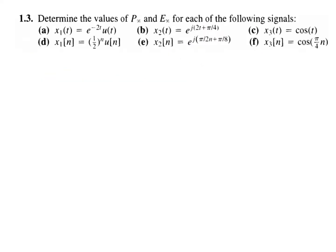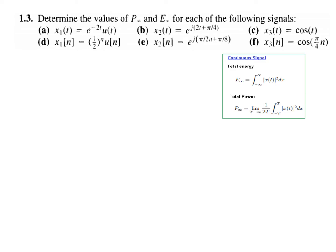Now let's come to question number 1.3. We have to determine the infinite power and infinite energy for six signals — A, B, C are continuous time signals and D, E, F are discrete time signals. In this video we will solve the first three for continuous time, and in the next video the next three for discrete time. This is the formula we will follow for continuous time.